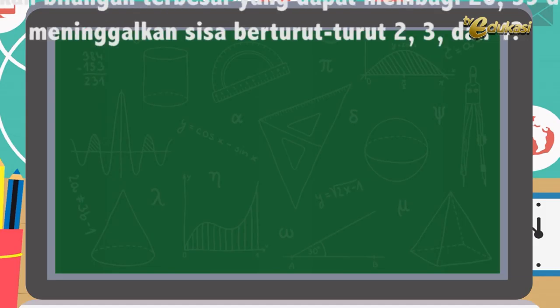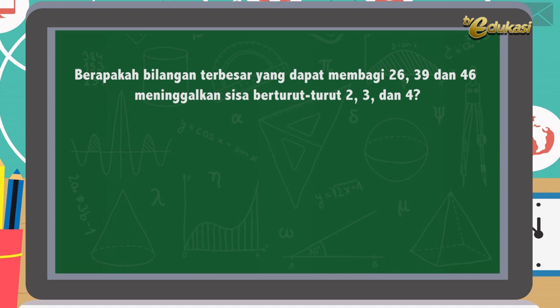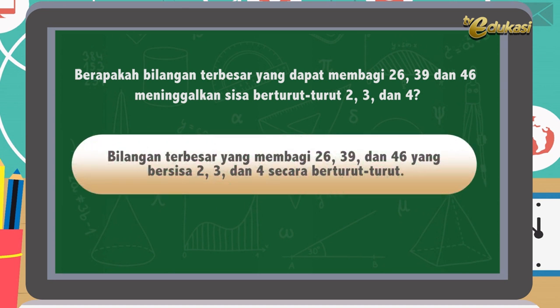Anak-anak, sekarang Bapak akan memberikan soal tentang FPB dan KPK dalam bentuk HOTS atau Higher Order Thinking Skill. Perhatikan soal berikut ini. Berapakah bilangan terbesar yang dapat membagi 26, 39, dan 46, meninggalkan sisa berturut-turut 2, 3, dan 4? Solusi: informasi — bilangan terbesar yang membagi 26, 39, dan 46 yang bersisa 2, 3, dan 4 secara berturut-turut.